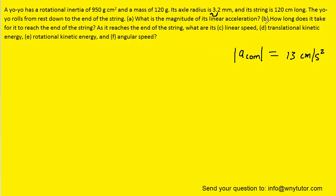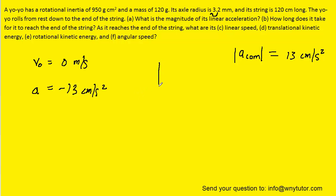Now on to part B, which asks us how long does it take for the yoyo to reach the end of the string. This problem is essentially a kinematics problem where we can establish the initial velocity of the yoyo to be 0 meters per second. The acceleration we just determined to be 13 centimeters per second squared. For this part of the problem, we're actually going to have to keep the negative sign because the yoyo is in fact accelerating downward.